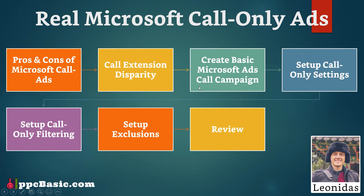We're going to create a basic Microsoft Ads call campaign, then set up the specific settings to convert it into a call-only ads campaign. Then we'll cover something extremely important that every other tutorial is missing — ensuring that the majority of your ads are call-only. This is one of the biggest steps and took me a large amount of money and time to figure out. Finally, we'll set up some exclusions to ensure Microsoft Ads is showing the call-only version of your ads, followed by a review at the end.